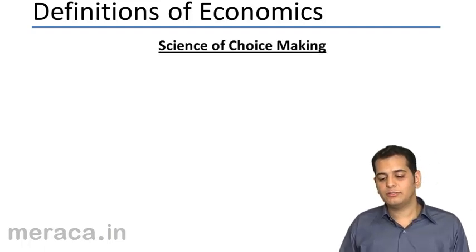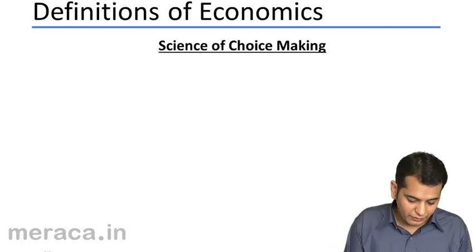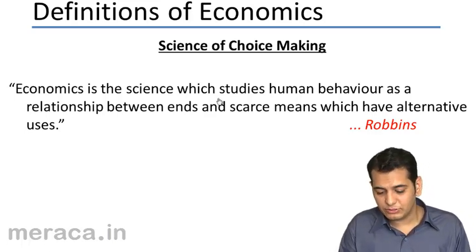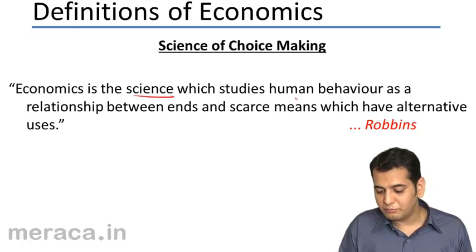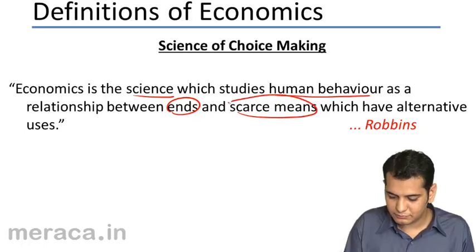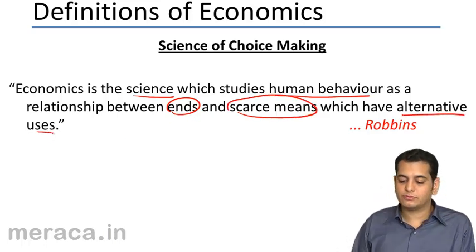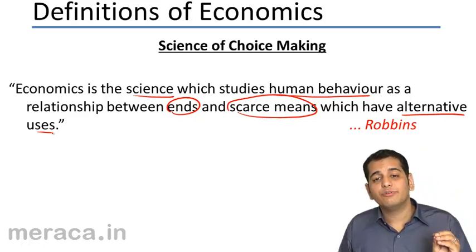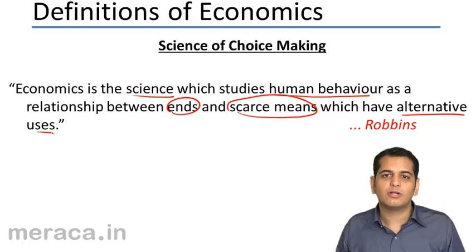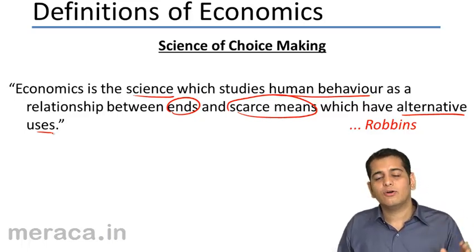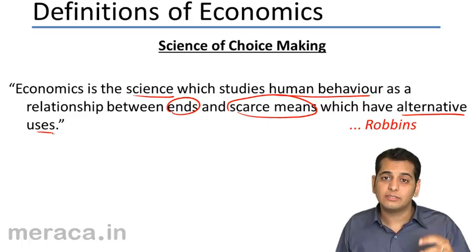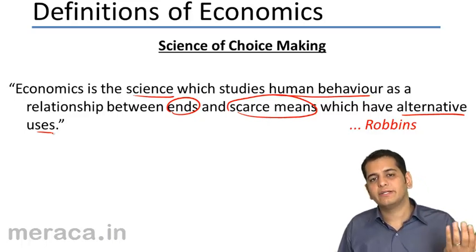Further, economics was defined as a science of choice making by Professor Lionel Robbins. He said economics is a science which deals with human behavior as a relationship between ends and scarce means which have alternative uses. This was the first time economics was formally called a science — before this, economists always defined economics as a study. Robbins defined it as a science of human behavior.